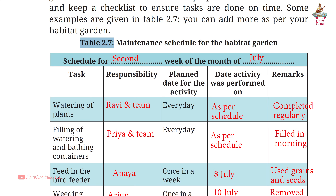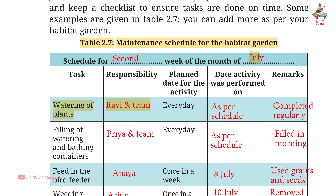Page 45, Table 2.7 — Maintenance schedule for the Habitat Garden, second week of July. Task 1: Watering of plants — Responsibility: Ravi and team — Planned: Every day — Remarks: Completed regularly. Task 2: Filling of watering and bathing containers — Responsibility: Priya and team — Planned: Every day — Remarks: Filled in morning.